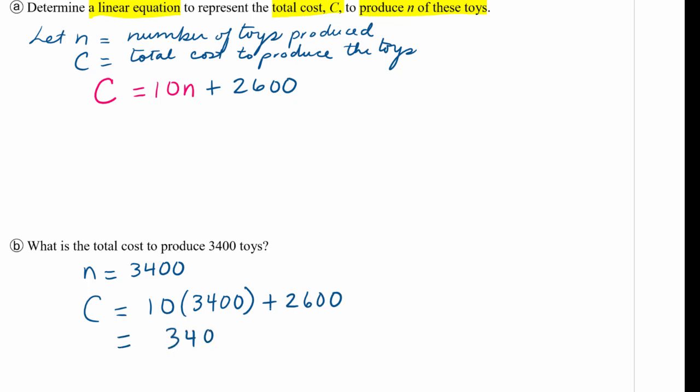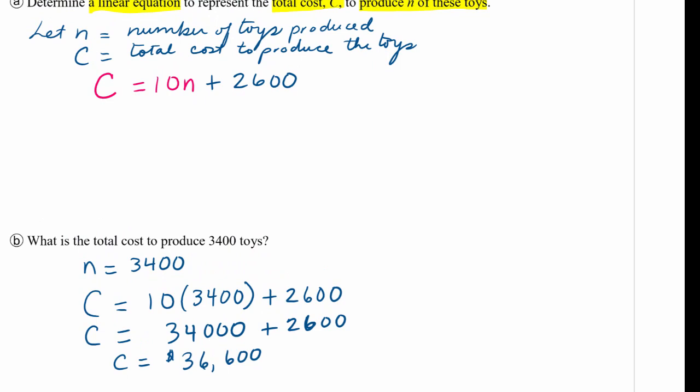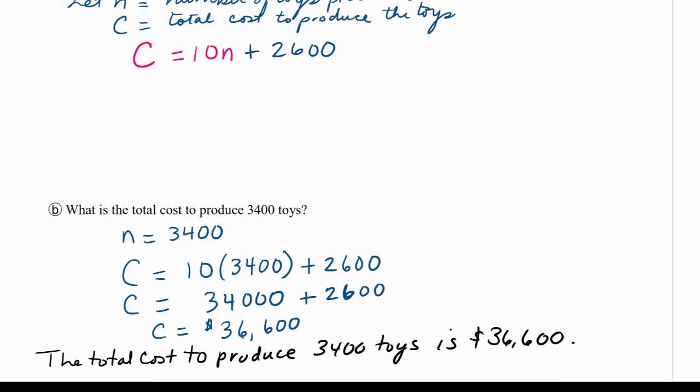So let's see what we get there. This would be 34,000 plus 2,600. And so we get $36,600. So our conclusion statement here is that the total cost to produce 3,400 toys is $36,600. I'm going to actually write that down. So there's my conclusion statement, the total cost to produce 3,400 toys is $36,600. Includes units. Everything's very clear.